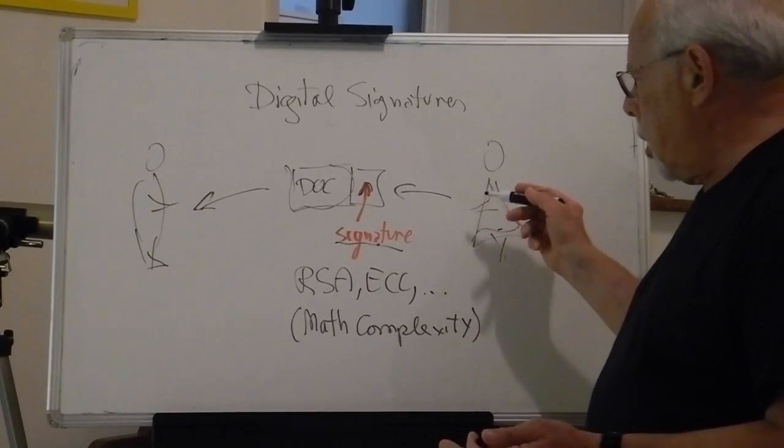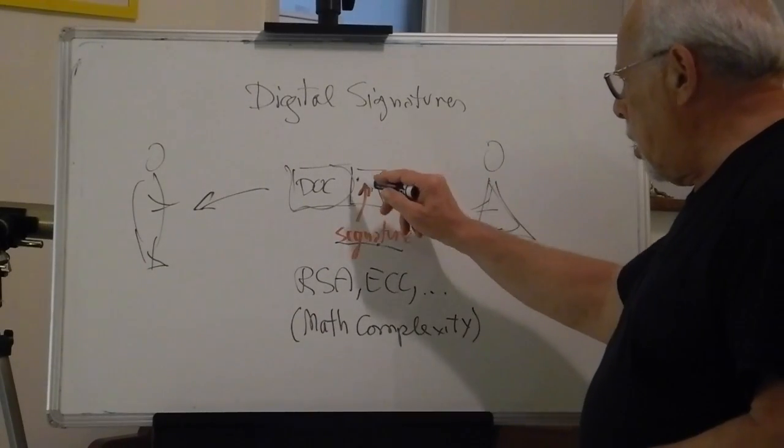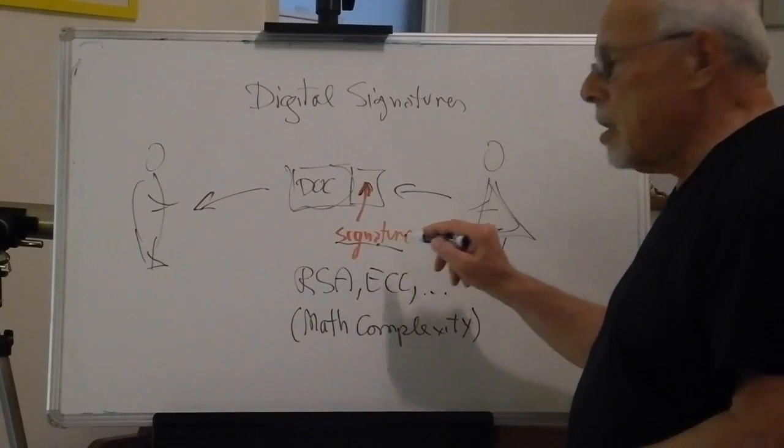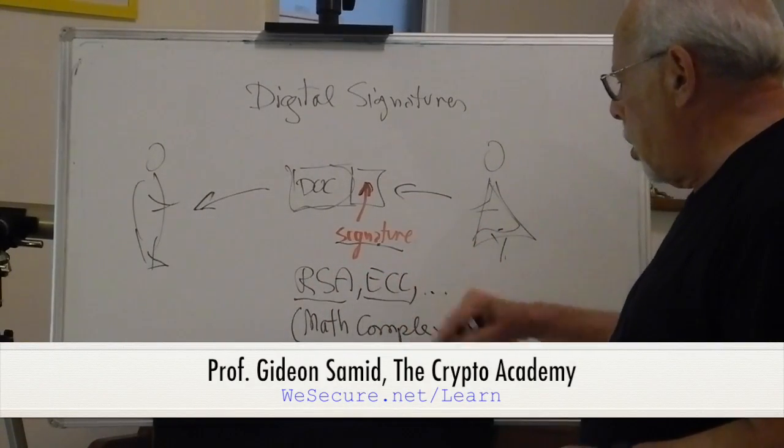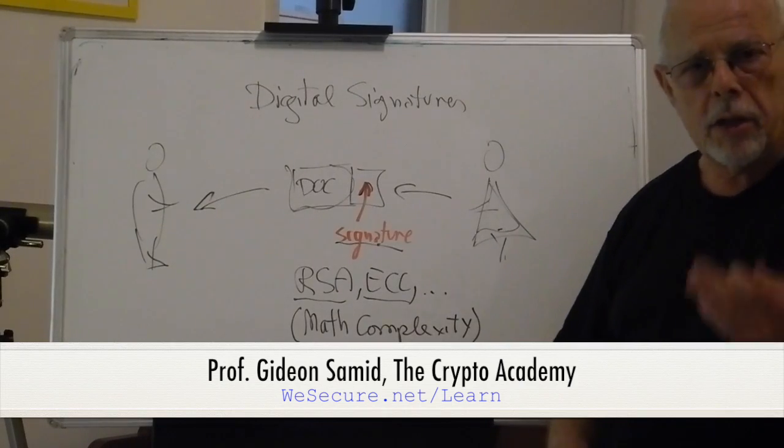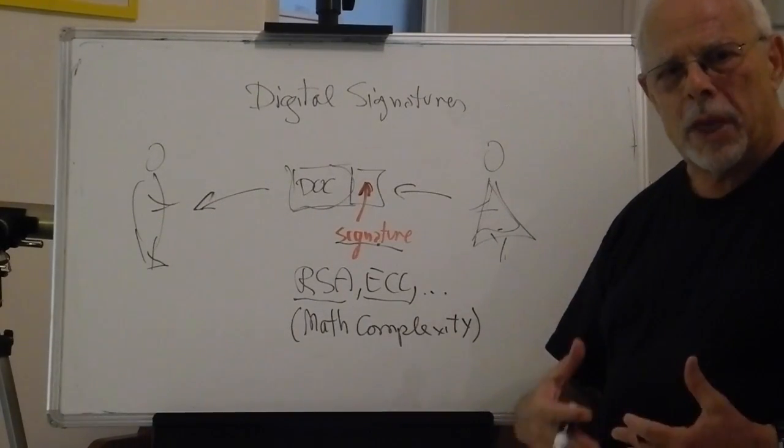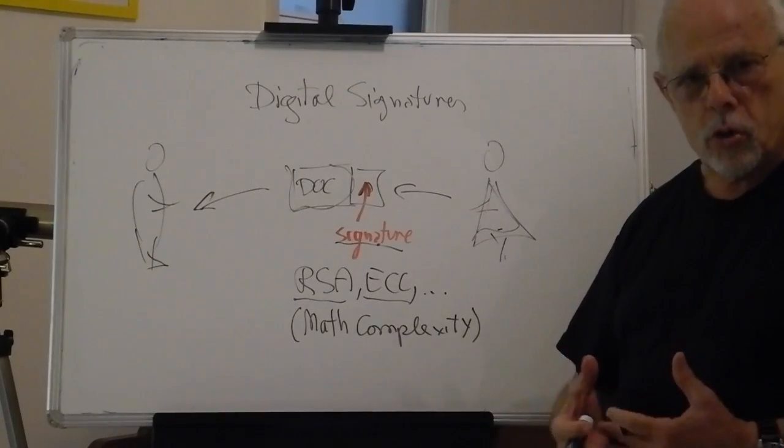The way a signature is exercised today is mostly through the ECC and RSA and other algorithmic complexity solutions.